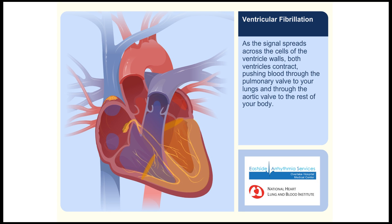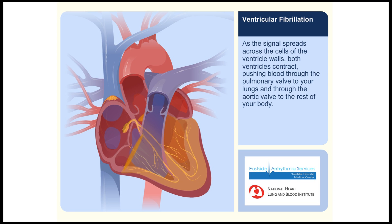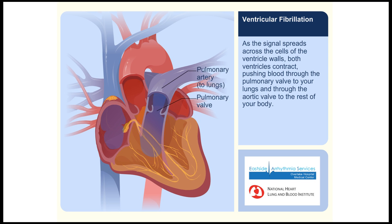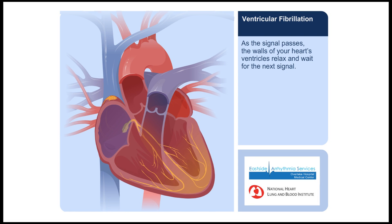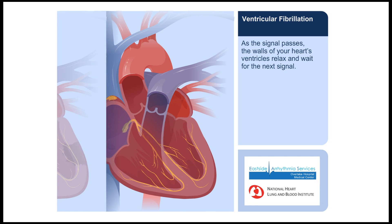As the signal spreads across the cells of the ventricle walls, both ventricles contract, pushing blood through the pulmonary valve to your lungs and through the aortic valve to the rest of your body. As the signal passes, the walls of your heart's ventricles relax and wait for the next signal.